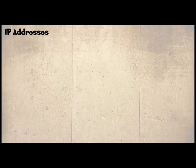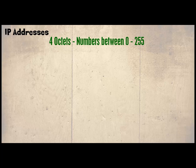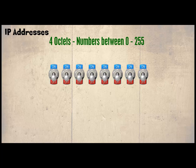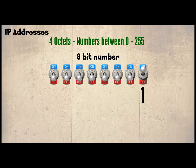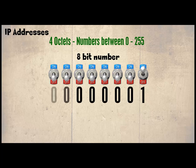As we have seen, an IP address consists of 4 octets and each octet must be between 0 and 255. Binary works on the numbers 0 and 1, or an off and on state. So let's take a series of 8 switches — this represents an 8-bit number. Under each switch we place either a 0 if it is in its off state or a 1 if it is in its on state. This will represent our binary number.